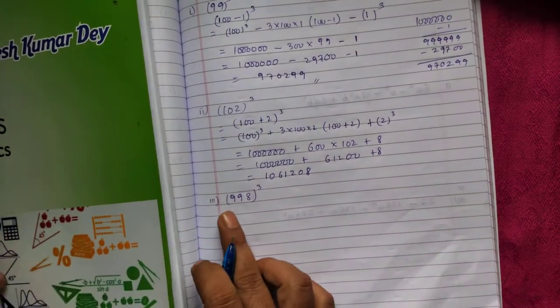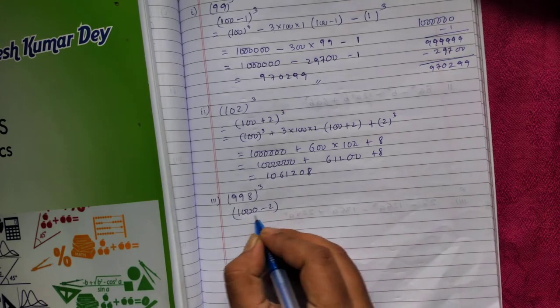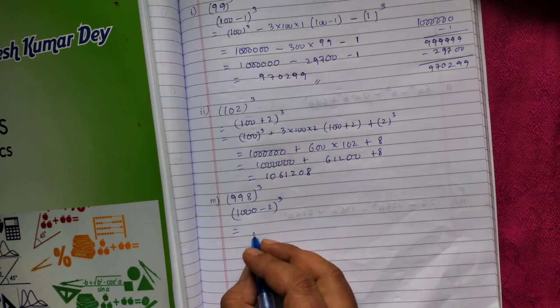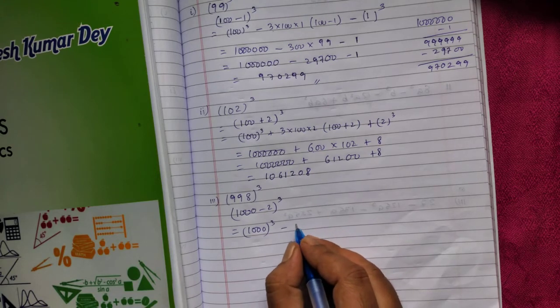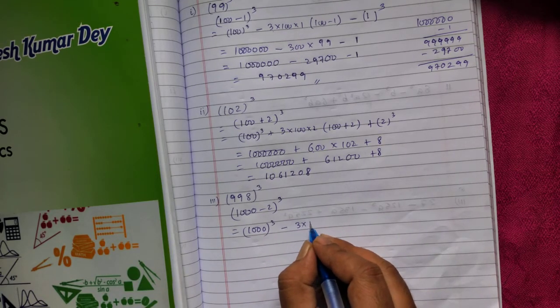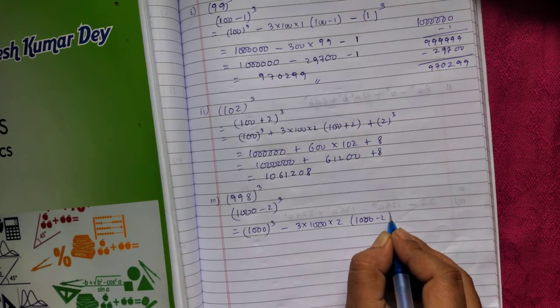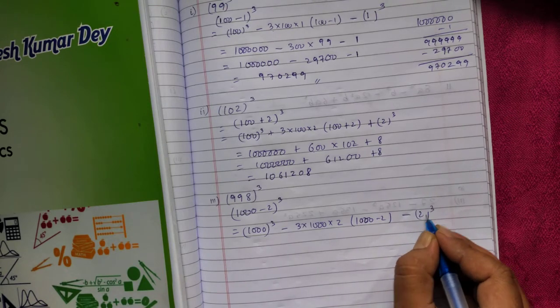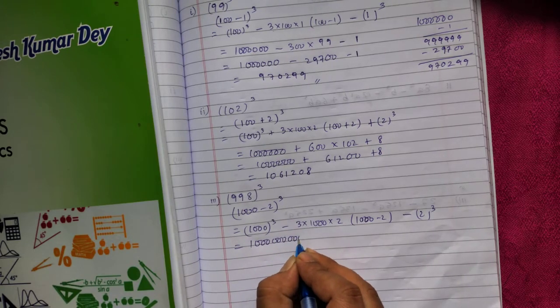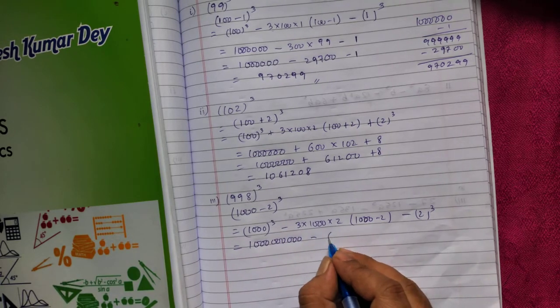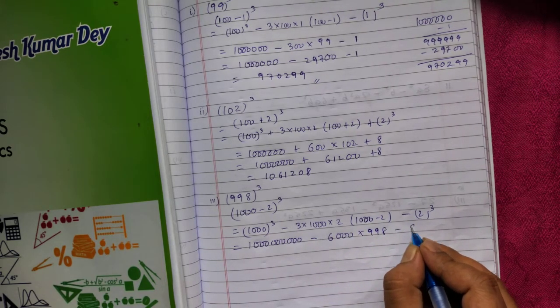Next is 998. I can write nearest is 1000 minus 2. This is in the form of A minus B whole cube, so you can use A cube minus 3AB - 3 into A is 1000, into B is 2, A minus B is 1000 minus 2 - minus B cube, 2 cube. It will become 9 zeros since cube is there. 3 times 2 is 6000 into 998, minus 2 cube is 8.